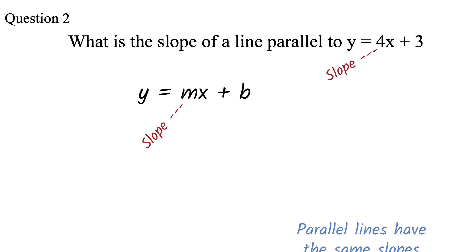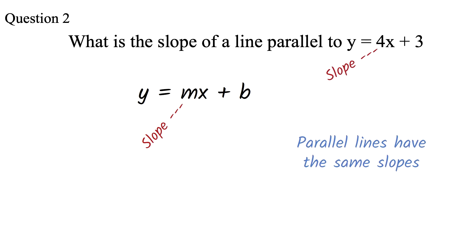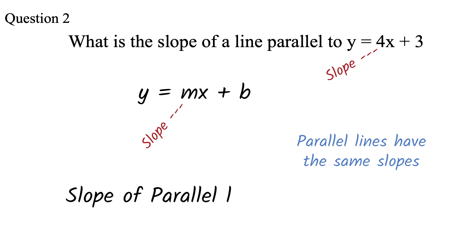So here the slope is 4. Secondly, you have to know that parallel lines have the same slopes. So if a line is parallel to y equals 4x plus 3, then the slope of that line must also be 4. So our answer is 4.